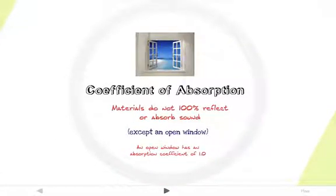Materials are neither perfect reflectors nor absorbers of sound. The coefficient of absorption measures how efficiently a material absorbs sound. When all the sound energy striking the material is absorbed and none is reflected, the absorption coefficient is 1.0. This happens when sound flies out an open window, for example. The window opening is said to absorb and not reflect all the sound.